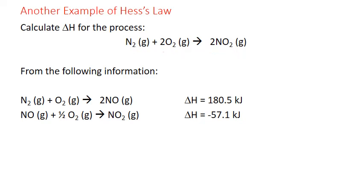I start by looking at each reactant and product in my final equation and figuring out how to rearrange each given equation. Starting with N2: the first equation has N2 on the reactant side with a coefficient of one, which is exactly what I need. So the first equation is in good shape. Next, I look at oxygen — I need two oxygens on the reactant side. The first equation has one, and the second equation also has oxygen on the reactant side, but with a coefficient of one-half.